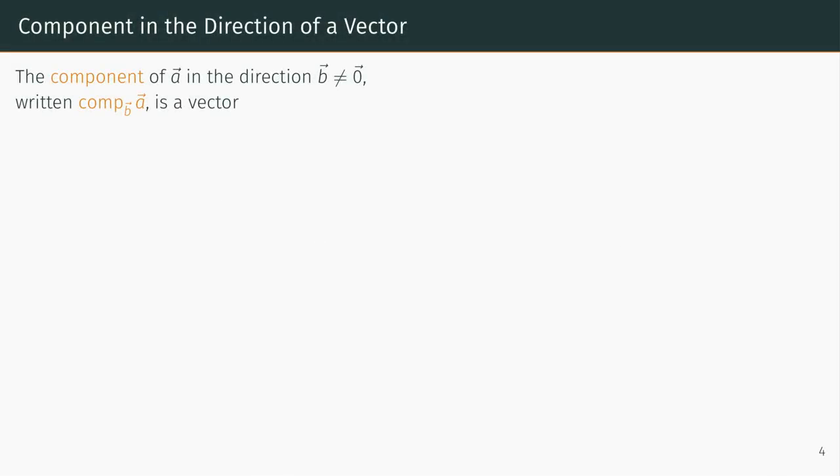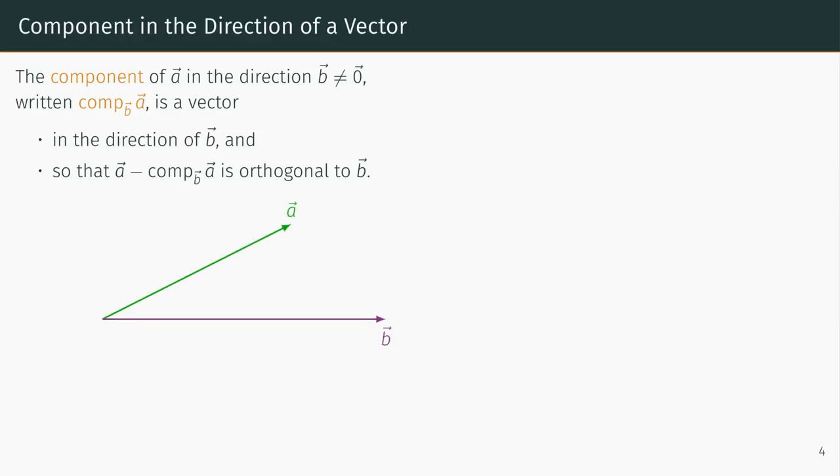Lastly, we will discuss the component of one vector in the direction of another. The component of the vector a in the direction of a nonzero vector b is the unique vector in the direction of b, so that when you subtract off the component of the vector a in the direction of b from a, it becomes orthogonal to b. Let's look at that with a picture. The component of a in the direction b is a vector in the direction of b, and when you take a minus that component, it's orthogonal to b. Using these two properties, we can develop a formula for computing the component of the vector a in the direction b.